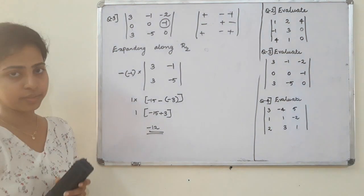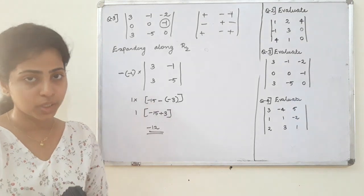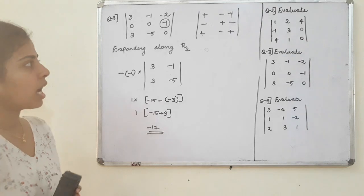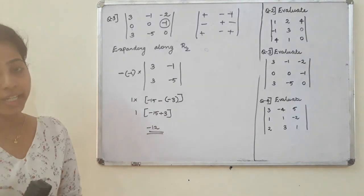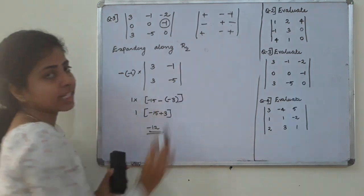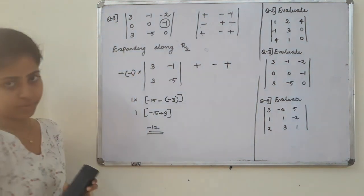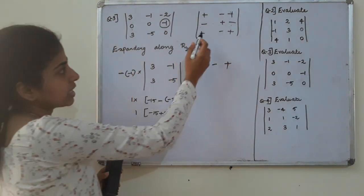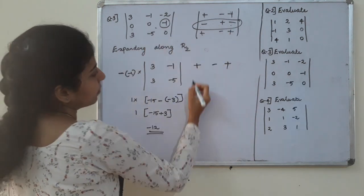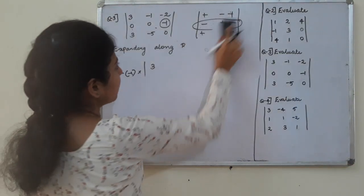Let's do it step by step. Look at the determinant value — how many zeros along the row we expand, then we can solve it. Negative sign, negative side, negative and positive.